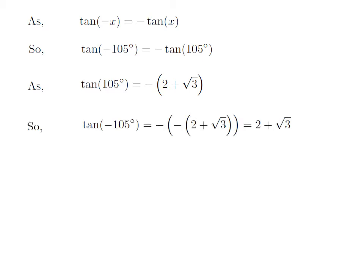So, we get the value of tangent of minus 105 degrees is equal to minus of minus the whole expression 2 plus square root of 3, which is equal to 2 plus square root of 3, as the minus of minus is plus.